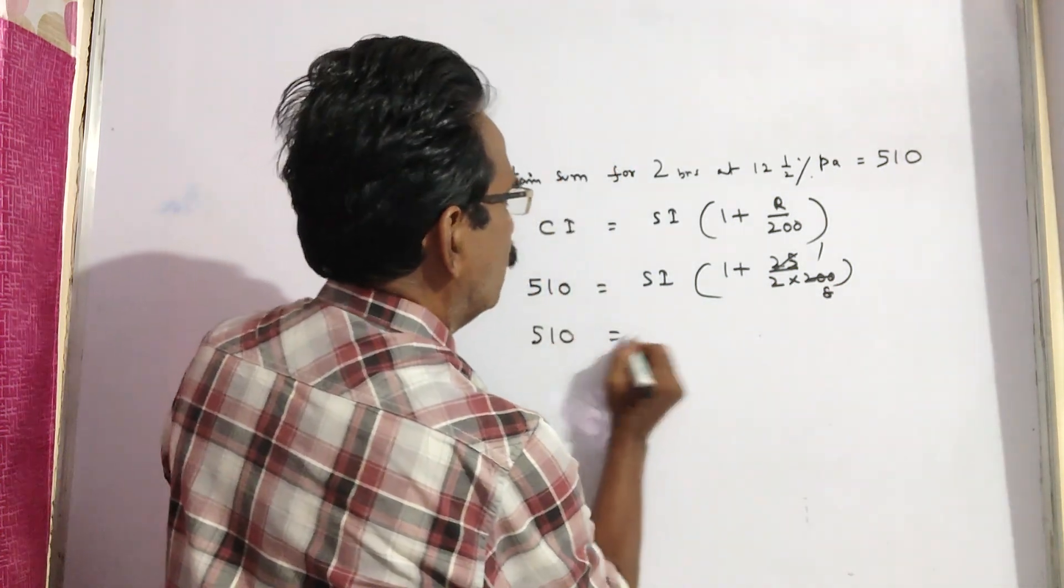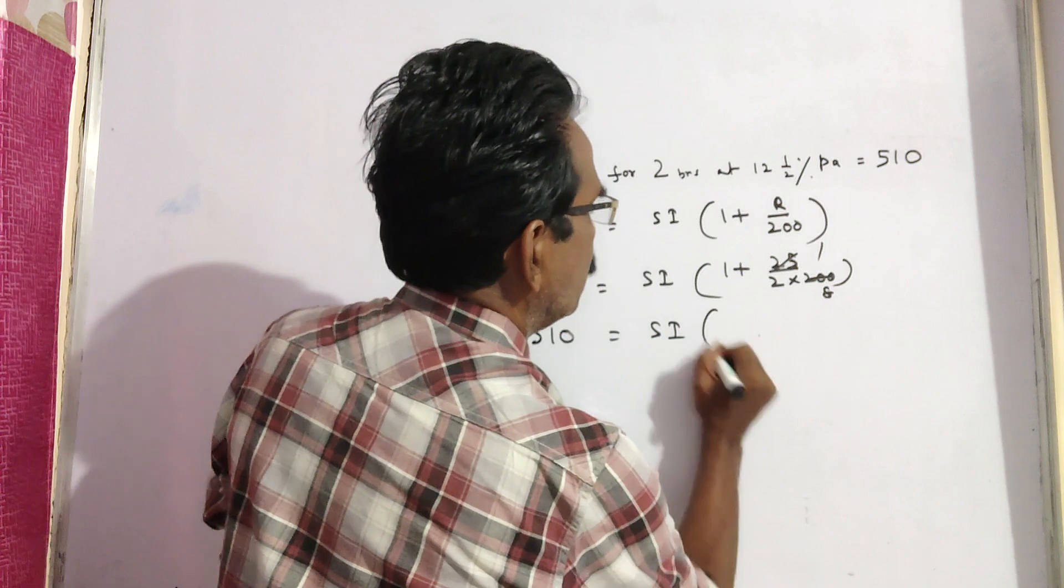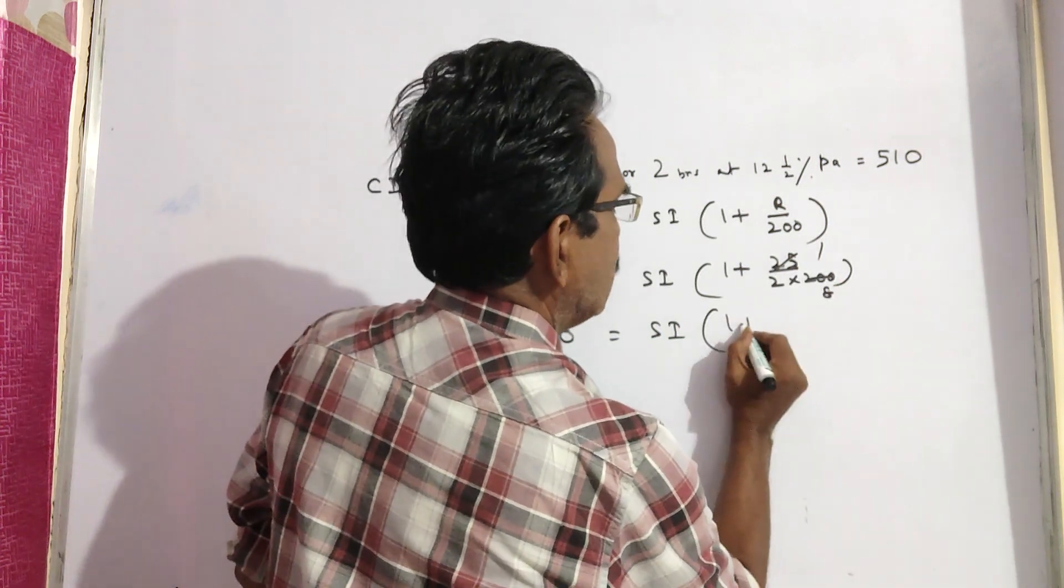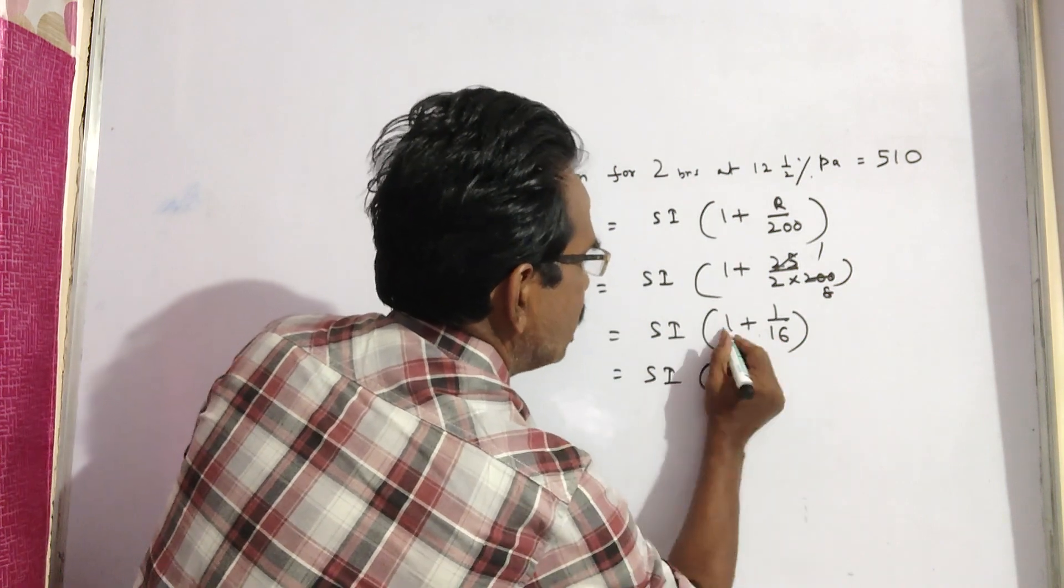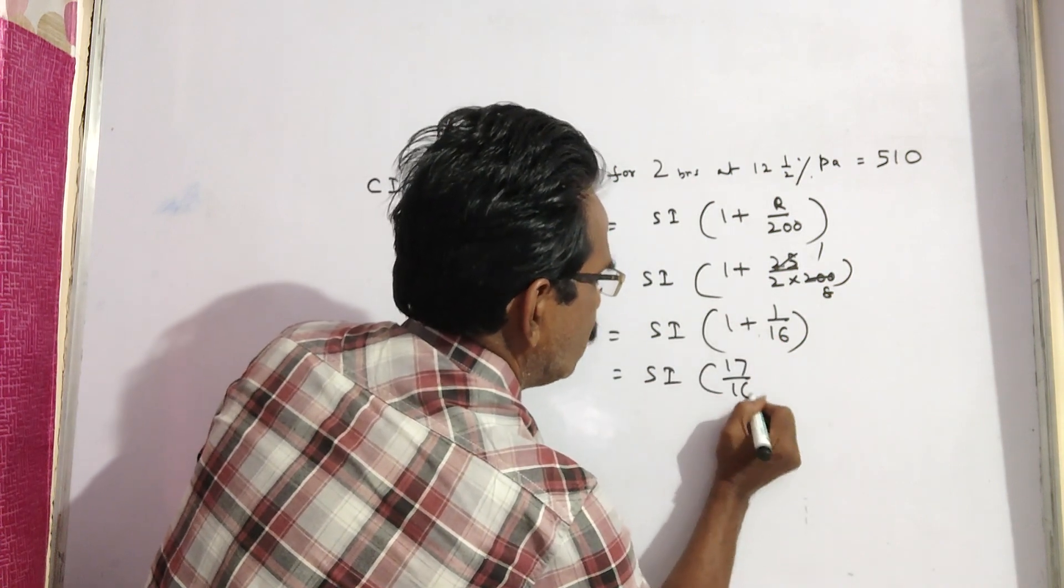So, 510 equals SI into 1 plus 1 by 16, that is equal to SI into 16 plus 1, which is 17 by 16.